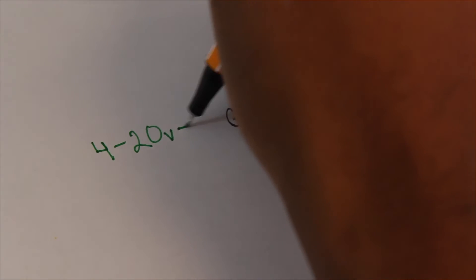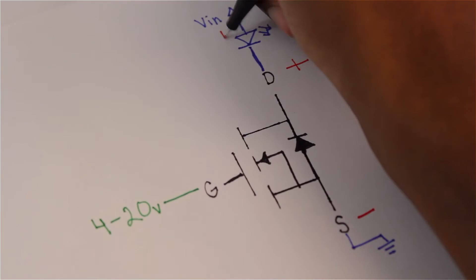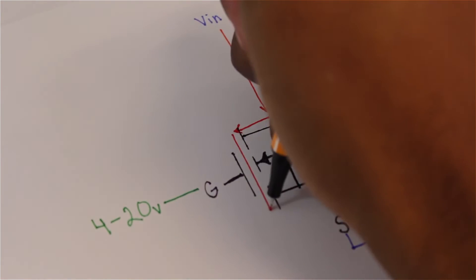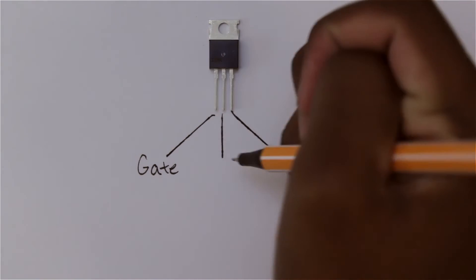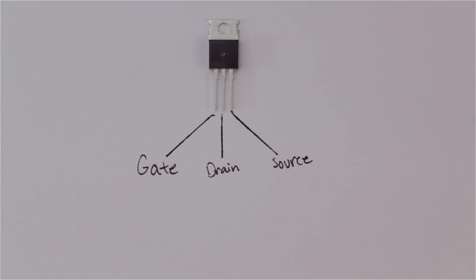Then we apply anywhere from 4 volts to 20 volts at the gate to turn it on. This allows current to flow from the supply, through the LED, through the MOSFET, and out to ground. The pinout of the MOSFET is gate, drain, and then source.